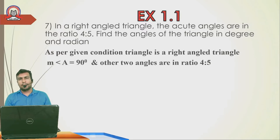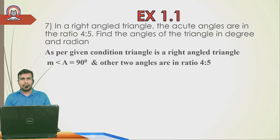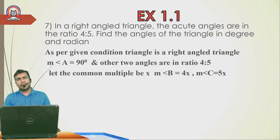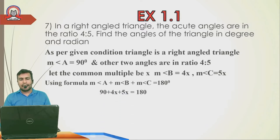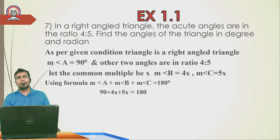Whenever a ratio is given, we assume a common multiple x. So let Angle B = 4x and Angle C = 5x. Using the formula Angle A + Angle B + Angle C = 180°: putting 90 + 4x + 5x = 180°.